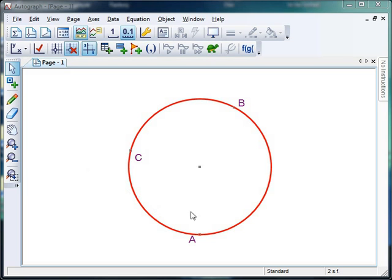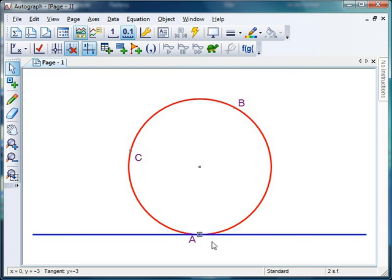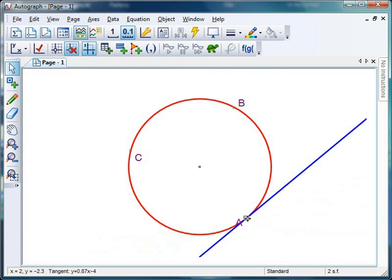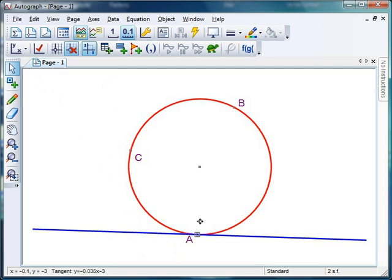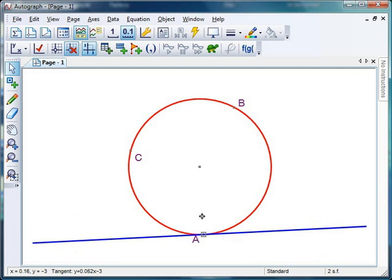So to do this, we need to tell Autograph what point we'd like to create our tangent from, so I've just selected point A. We are going to need to right-click, and hopefully somewhere on that menu, yep, there it is, is a tangent. Now that might be the first time your students have seen a tangent, so it's quite nice just to move it around and ask them to describe what that line's actually doing. So there's your nice tangent there.